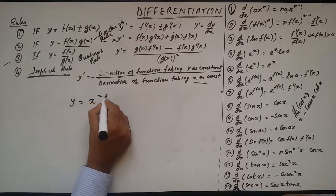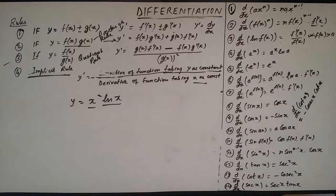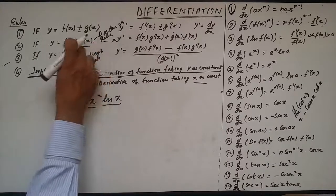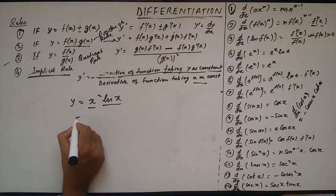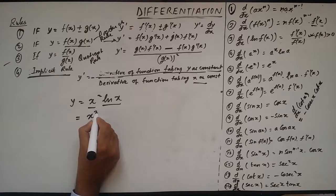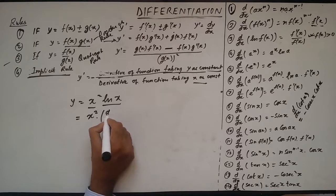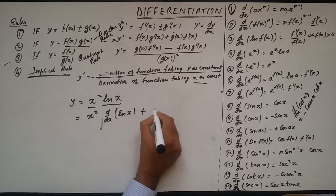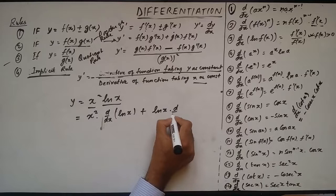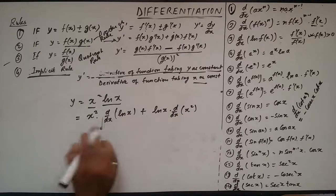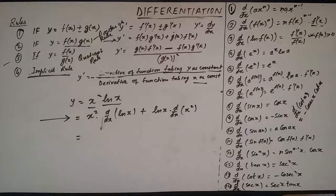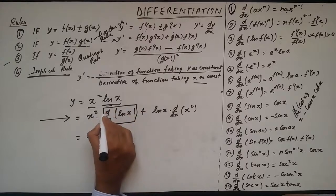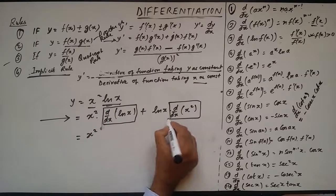y is equal to x² · ln(x). We see this is a product of two functions — a logarithm function and an algebraic function — so we apply the product rule. We write: the first function into d/dx of the second function, plus the second function into d/dx of the first function. We can write it in the long form: x² · d/dx[ln(x)] + ln(x) · d/dx[x²], applying the product rule.